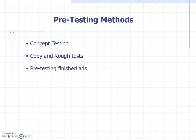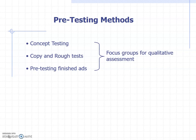We can also pre-test finished ads — ads that have gone through the production process. We use camera-ready ads, ready to be published in a magazine or shown on television as video ads. These can be examined in focus groups for qualitative assessment — showing the advertisement, even in a finished or roughly finished state, to focus groups to get their feedback.